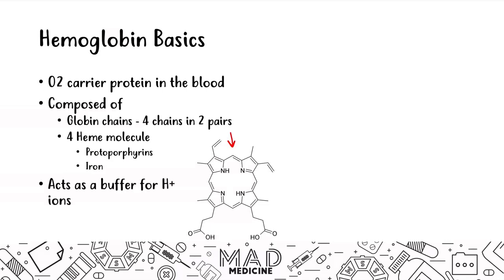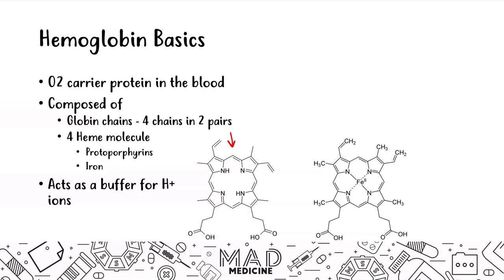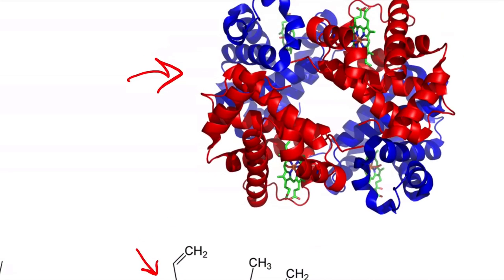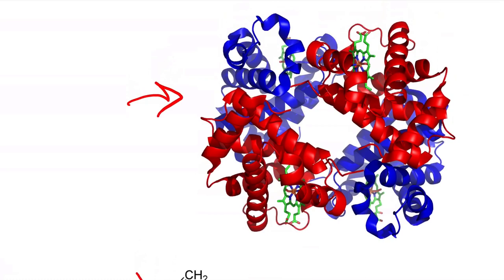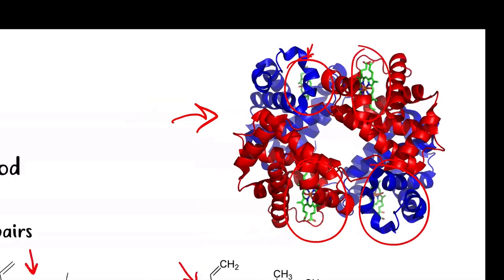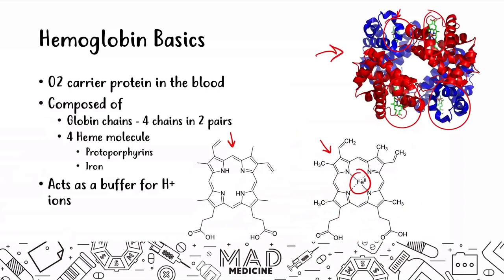Hemoglobin is also going to act as a buffer for protons in our blood. Here you can see a heme molecule — the protoporphyrin and the iron combined — and this is the molecular structure of hemoglobin. When we zoom in you can see the four globin chains in two pairs, and one, two, three, four heme molecules attached to those globin chains. That is hemoglobin completely.